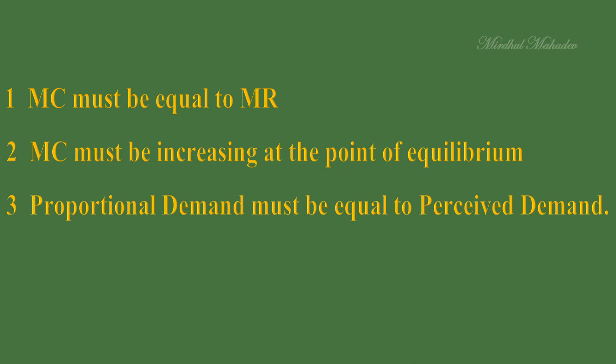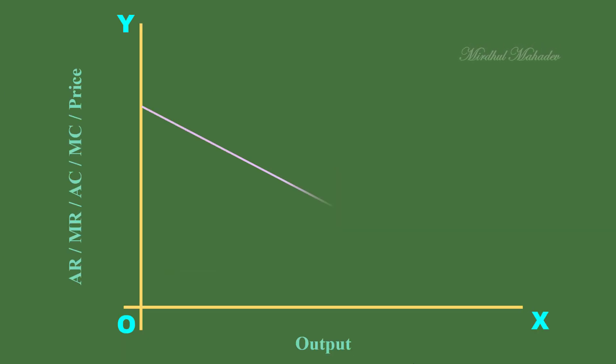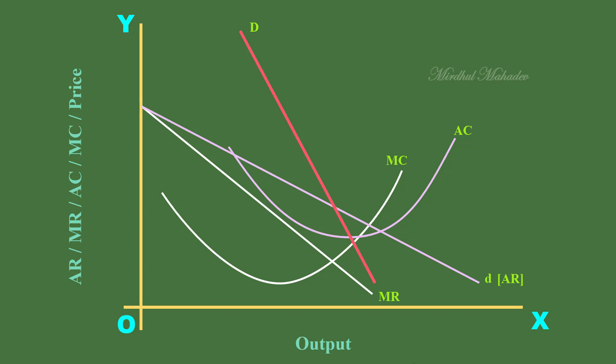To earn super normal profit, the firm has to satisfy one condition. When the firm is in equilibrium, its average revenue must be greater than average cost. Well, look at this graph. D is the perceived demand curve of the firm. It is the same as average revenue curve. Its corresponding marginal revenue curve is MR. D is the proportional demand curve. Marginal cost and average cost are represented by MC and AC curves.